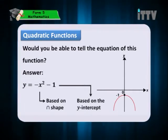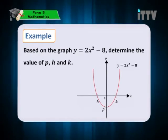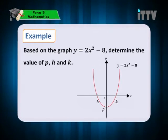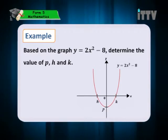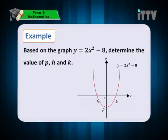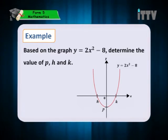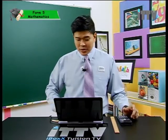Now on to our first example. Based on the graph y equals 2x-square minus 8, determine the values of p, h, and k. So we have three values for three unknowns. Take a look at the equation: y equals to 2x-square minus 8. Notice that p is the y-intercept and h and k are the x-intercepts.